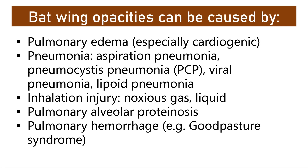Batwing opacities can be caused by pulmonary edema, especially cardiogenic, with certain pneumonias like aspiration pneumonia, pneumocystis pneumonia, viral pneumonia, and lipoid pneumonia, inhalation injury with noxious gas and liquid, pulmonary alveolar proteinosis, and pulmonary hemorrhage, for example, Goodpasture syndrome.